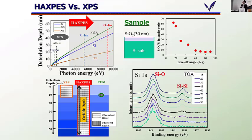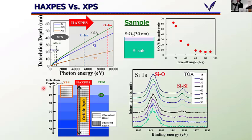As you all know, this is a very fundamental structure of LSI devices: surface-oxidized silicon by thermal oxidation. The film thickness was 30 nanometers. By increasing the photon energy of the X-ray, the detection depth can also be increased. Several nanometers can be observed using so-called HAXPES — in this case, 9 keV or something like that. From this figure, you can see both the silicon-silicon bond from the silicon substrate and the SiO bond from the SiO2 film. You can also detect this profile using takeoff-angle-dependent measurement.